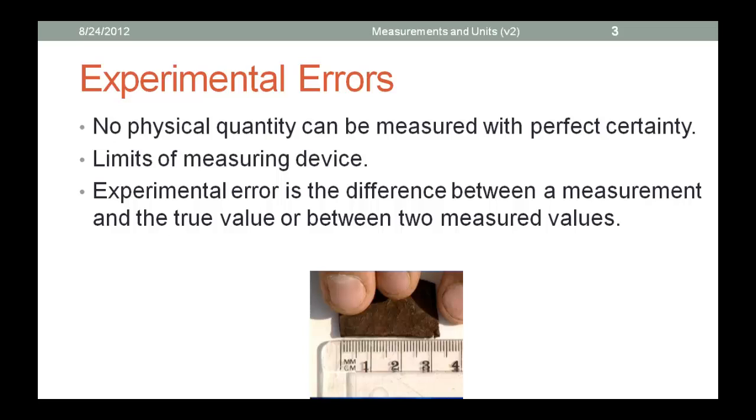Experimental error, then, is defined as the difference between a measurement and the true value or between two measured values. We may never know the true value. Experimental errors are measured by accuracy and precision.